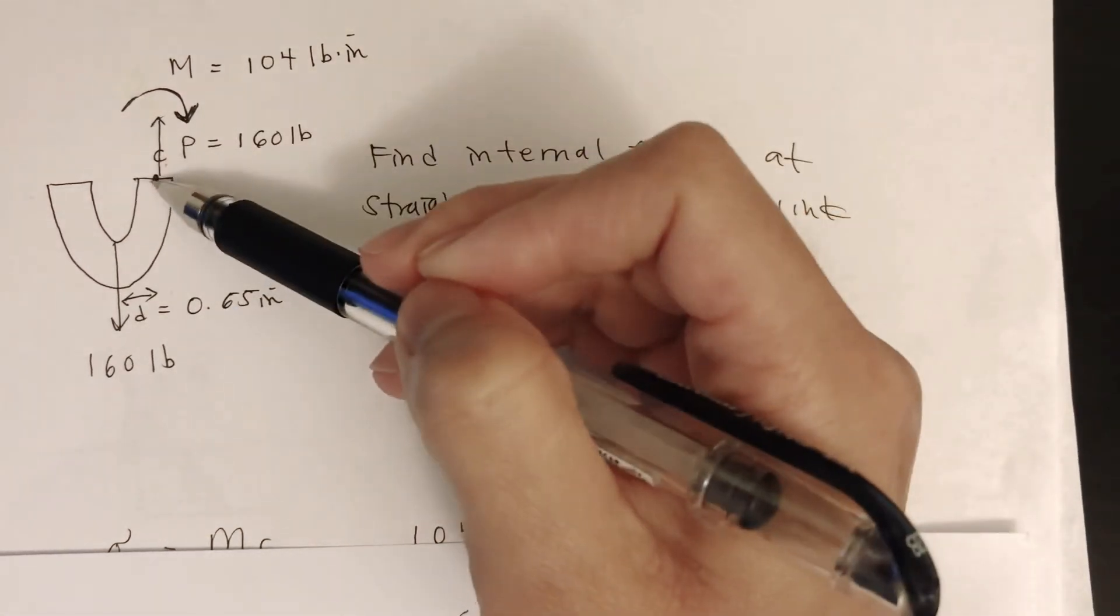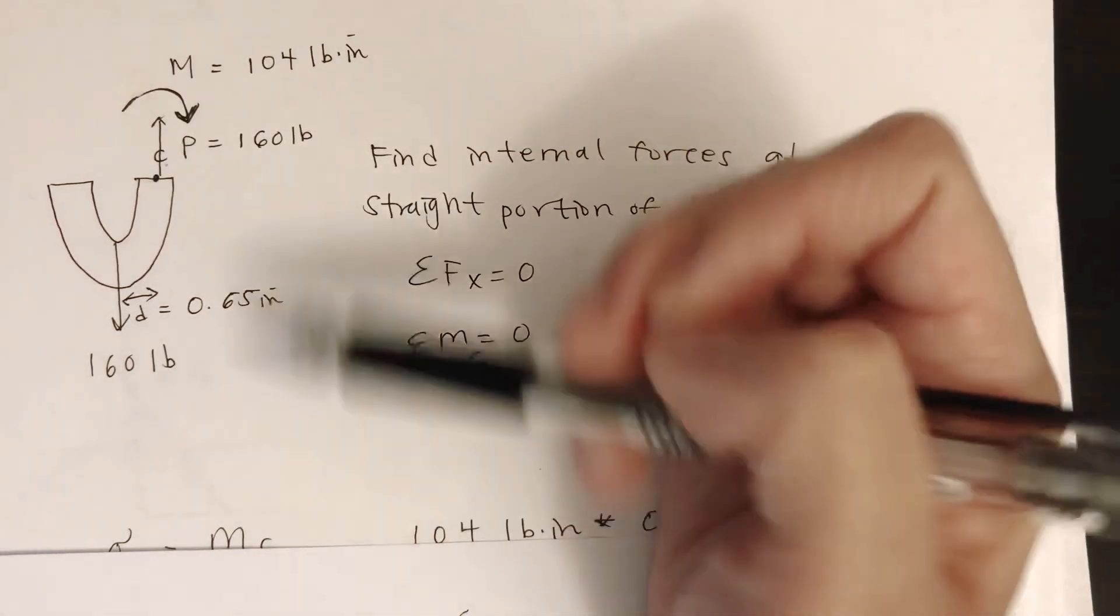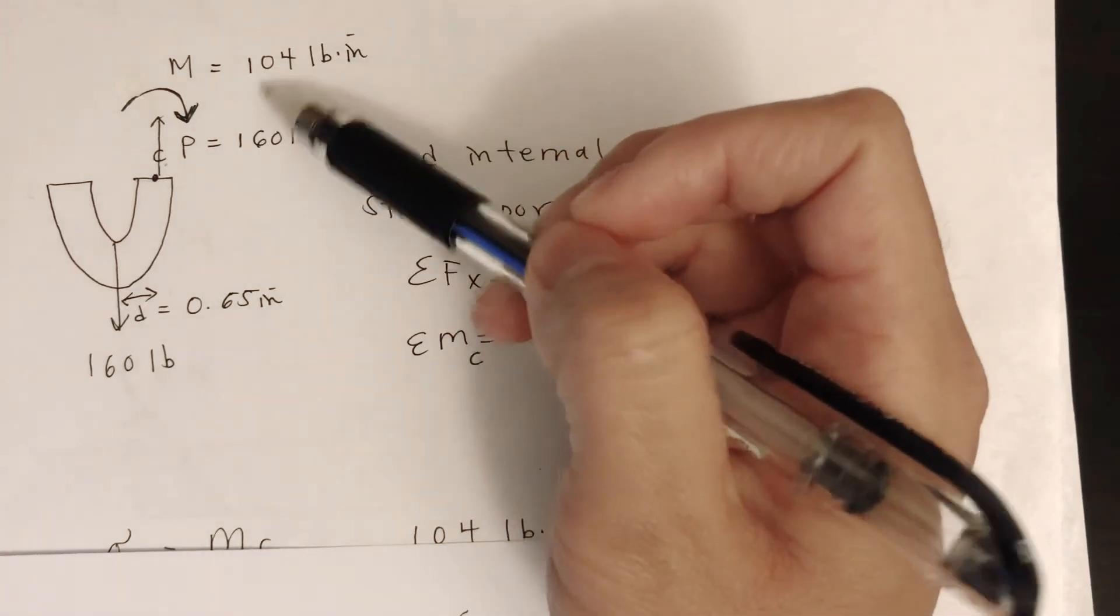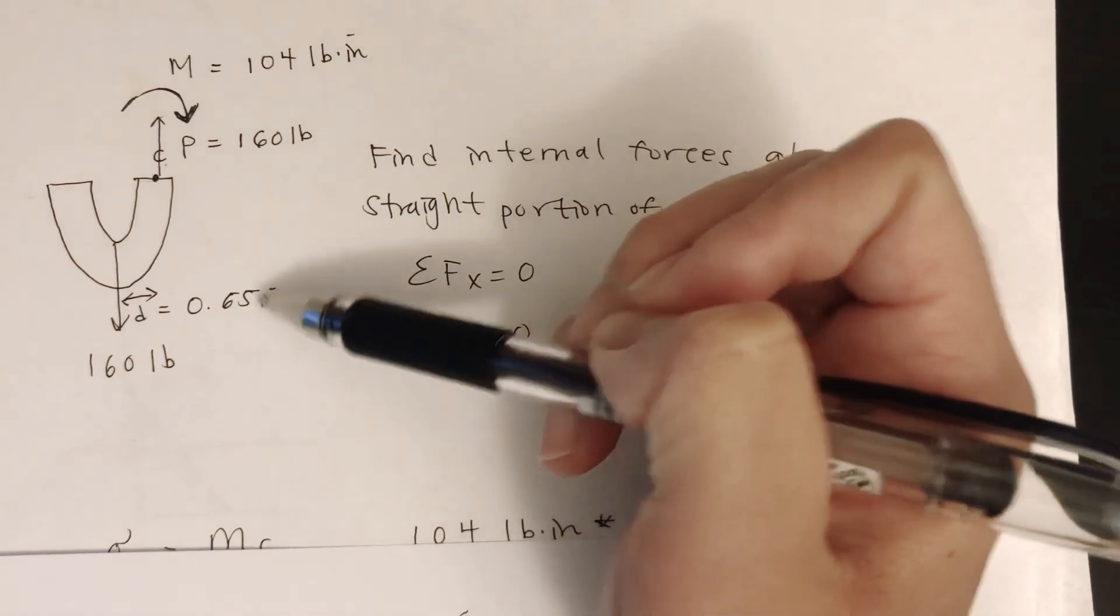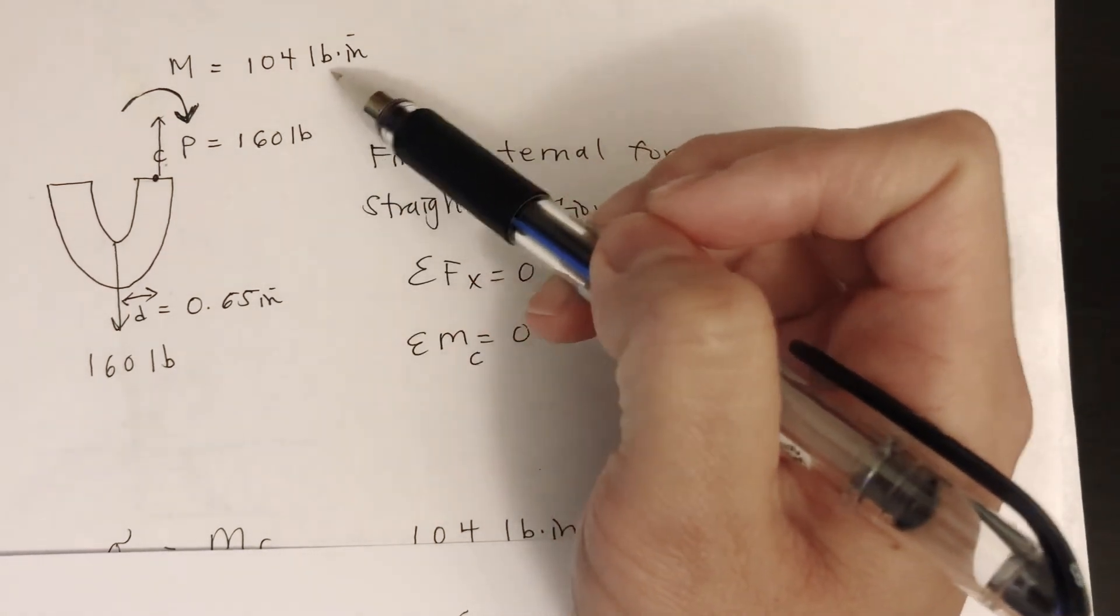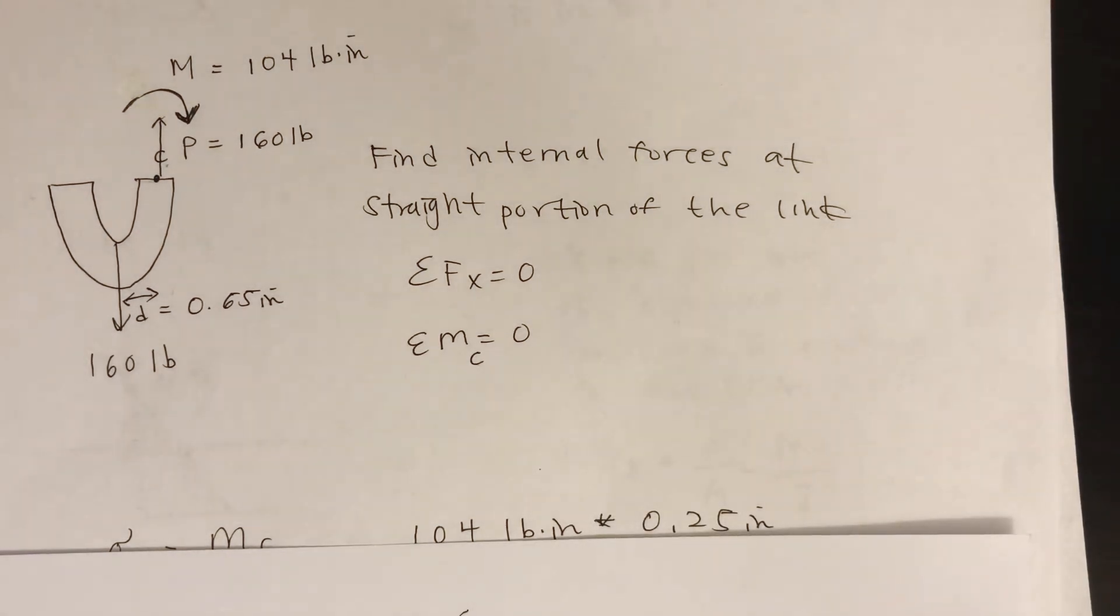Counterclockwise, so that means this moment has to be clockwise with magnitude P times d. So 160 times 0.65 equals 104 pound-inch clockwise. We found the moment, we found P. Slide 13 tells us moment equals P times d, which is 104 pound-inch.